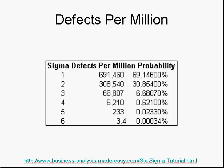So this chart shows how many defects to expect if you were to implement Six Sigma in your operation: 3.4 defects per million.